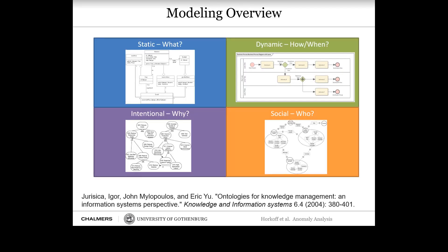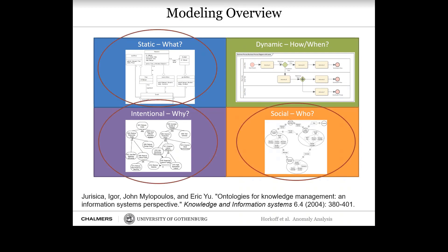A brief overview of modeling: you can think about models in four types. Static models like class diagrams and ER diagrams focus on the what. Dynamic models like process diagrams and BPMN focus on process. Intentional models, which I've worked in for many years, focus on the why — motivation-type diagrams. And social models like social network analysis and ecosystem models focus on who. In this project, we focused more or less on three of these dimensions: understanding attributes and data for anomalies, and then looking at who and why — why anomalies happen and who they affect.